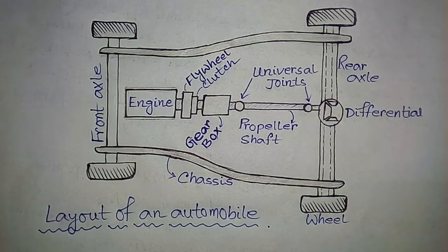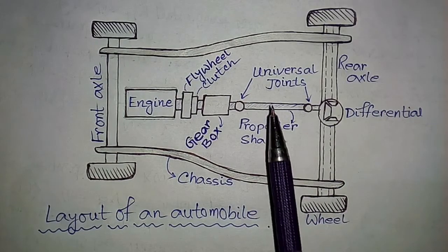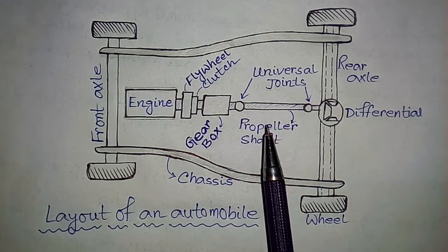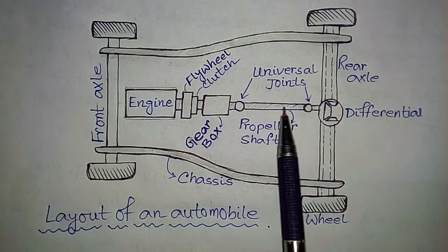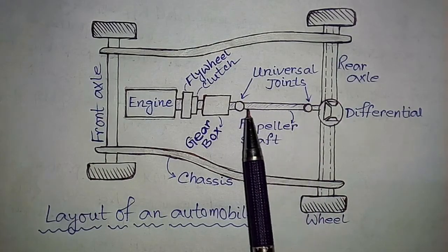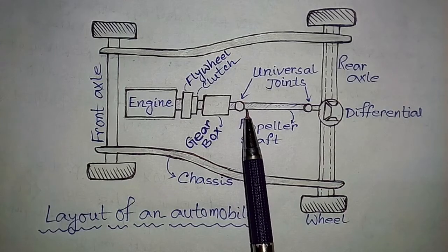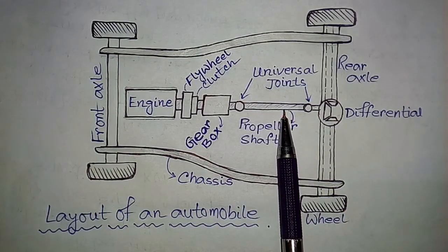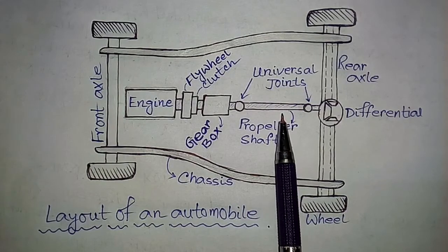This torque is then sent to the propeller shaft. This is the propeller shaft which is connected to the universal joint. These are universal joints. So from gearbox, power is transferred via propeller shaft.